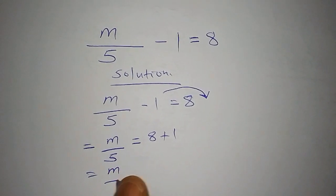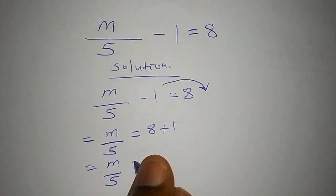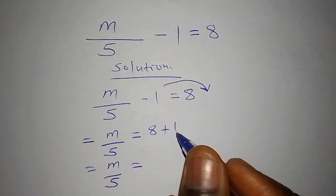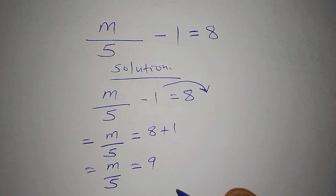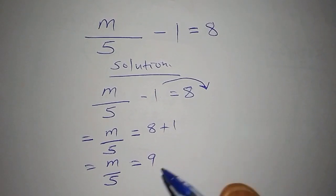The next step now we shall have m over 5 which equals to 8 add to 1, and 8 add to 1 is 9. The next step that we're going to do, we're going to multiply both sides by 5 so that we'll meet the m.